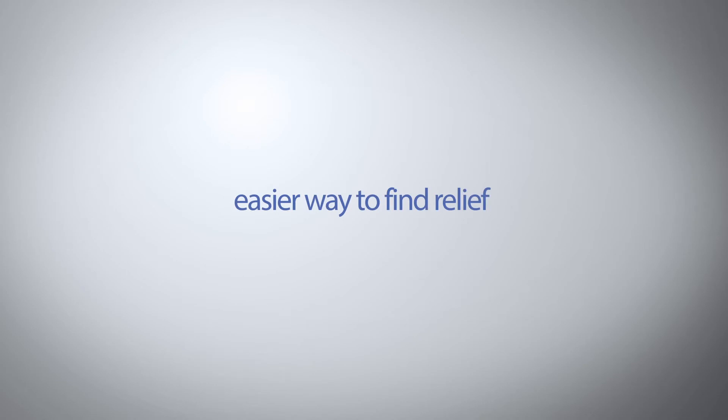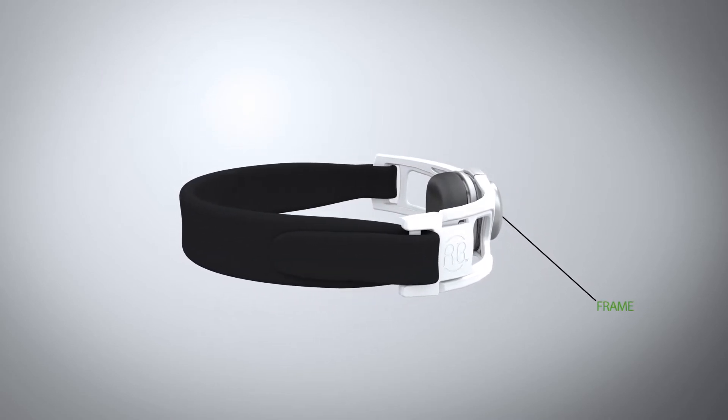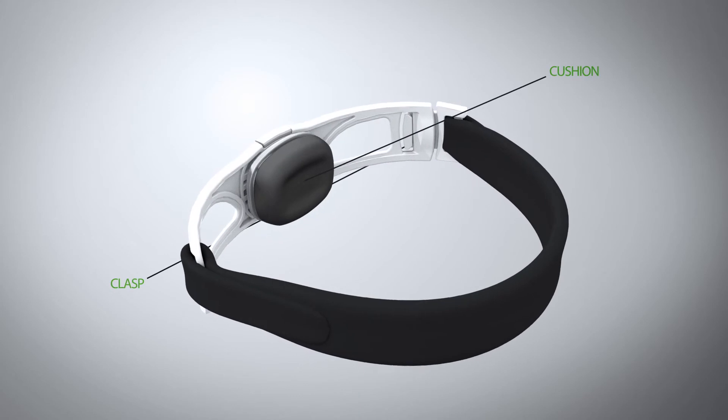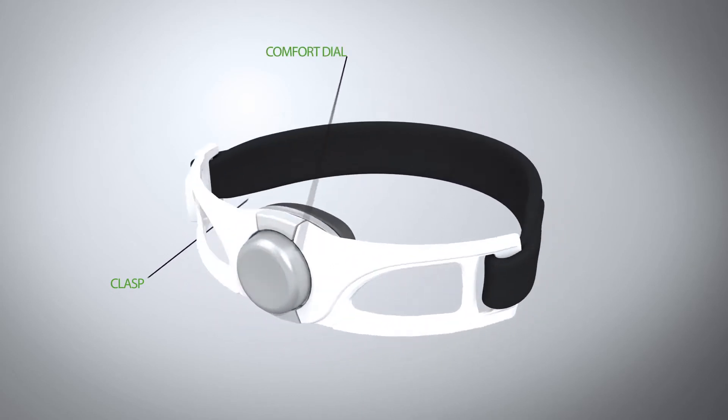Patients who suffer from this condition now have an easier way to find relief from their symptoms. The Razorband is a first-of-its-kind, externally-worn UES assist device designed to prevent nighttime regurgitation of acid reflux into the throat and lungs.